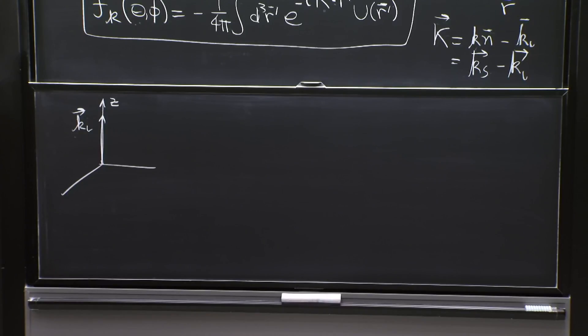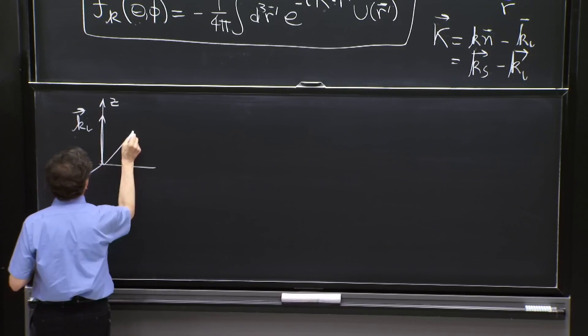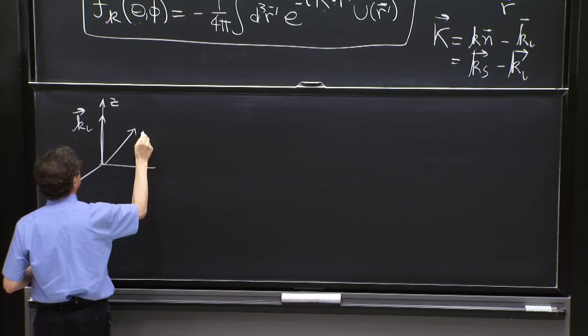As opposed to k incident, it is the same k multiplied by the unit z vector. So the scattered vector is the vector in the direction that you're looking at. So this is ks is over here.